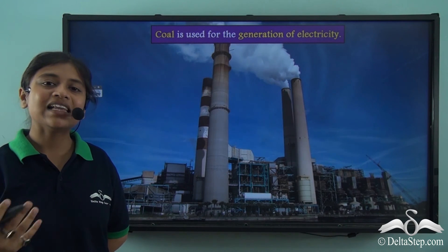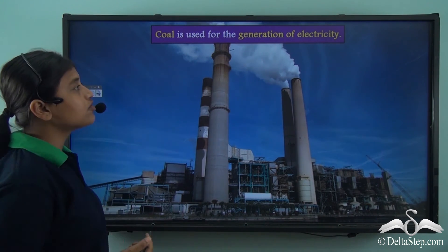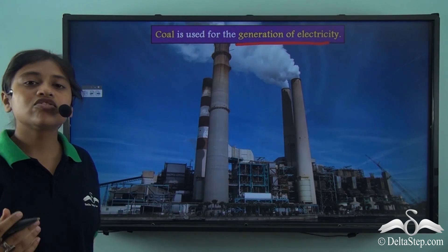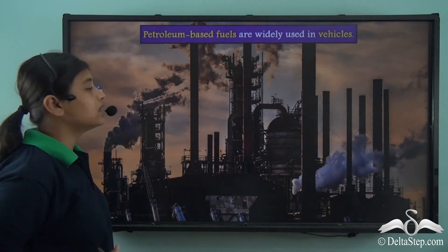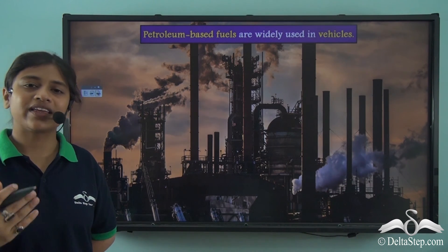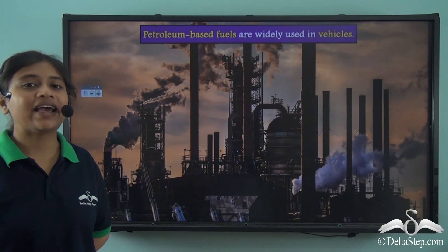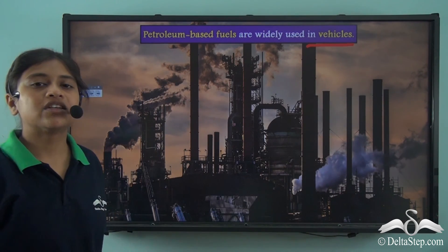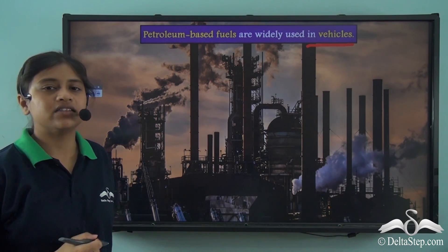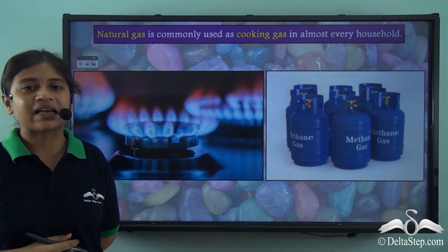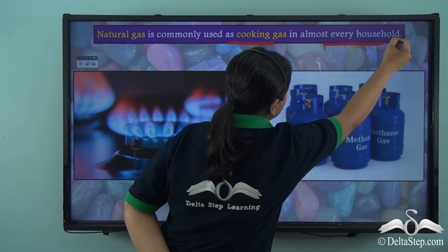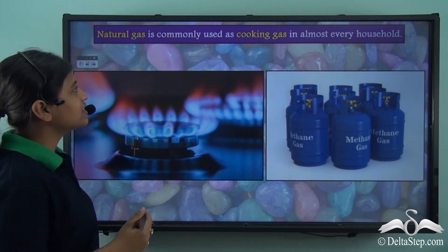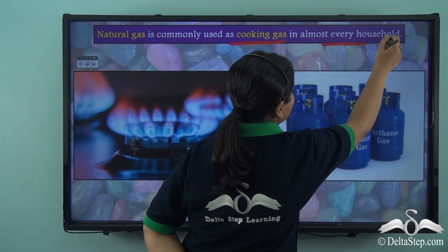These are also known as conventional energy resources. Coal is an organic mineral or fossil fuel used for the generation of electricity and as a fuel in many industries, such as the iron and steel industry. Petroleum-based fuels like diesel and petrol are commonly used as vehicular fuels. Natural gas is commonly used as a cooking gas in almost every household.